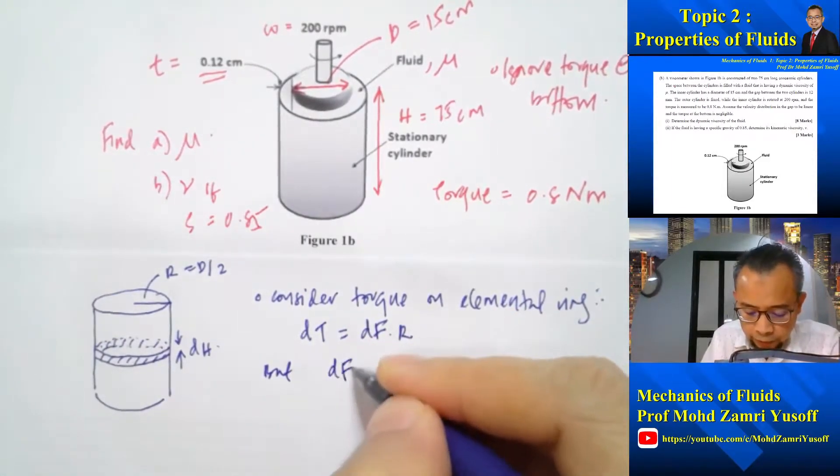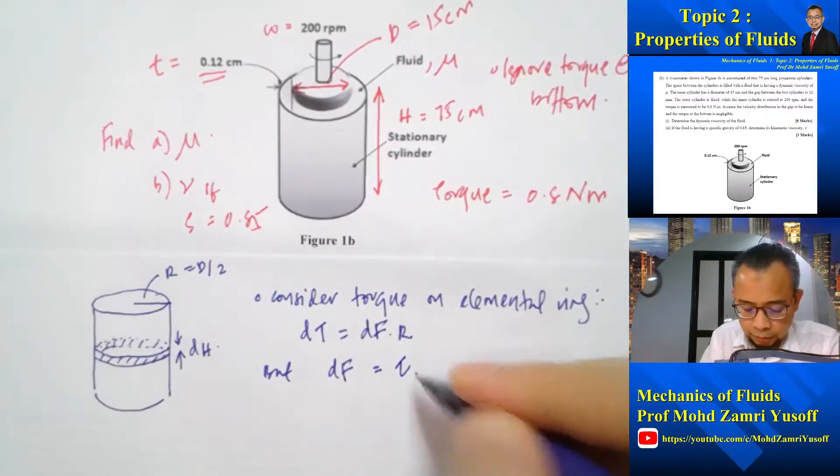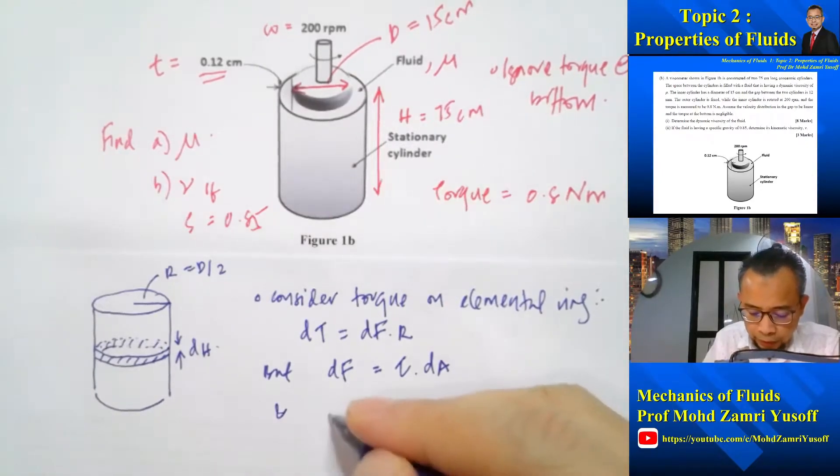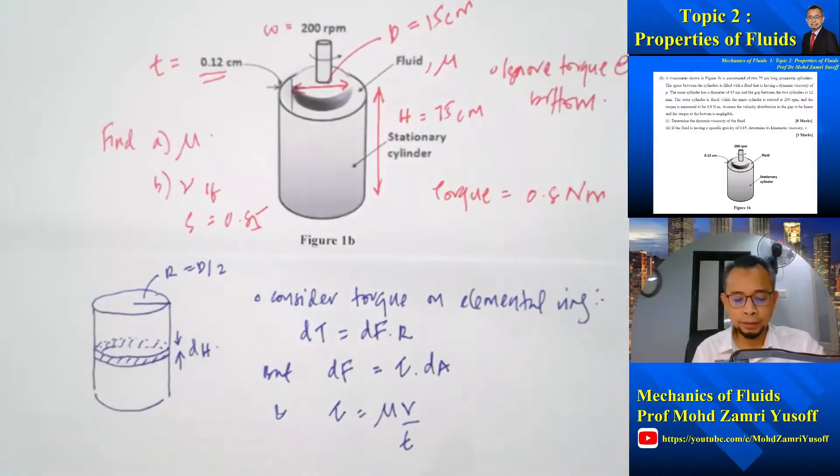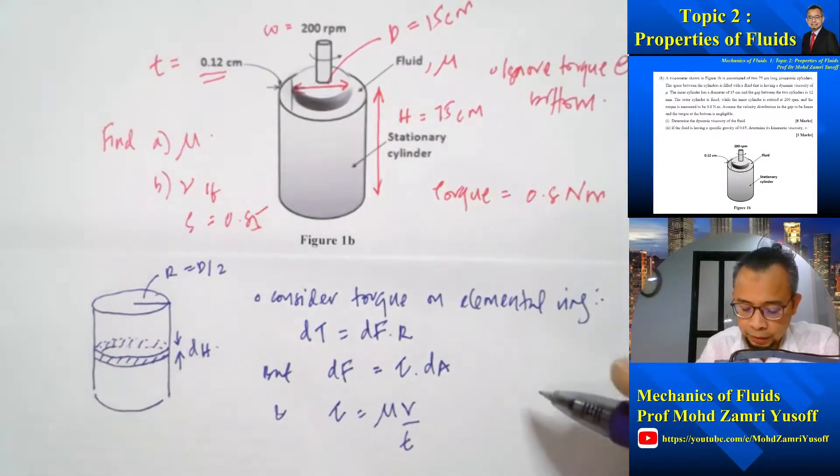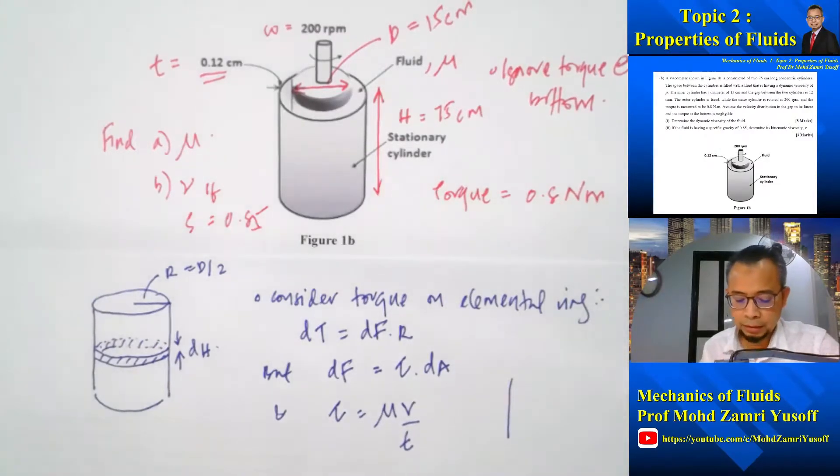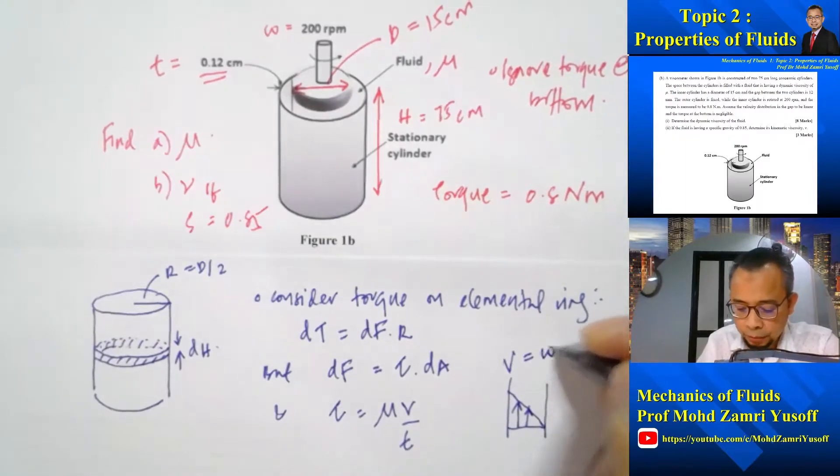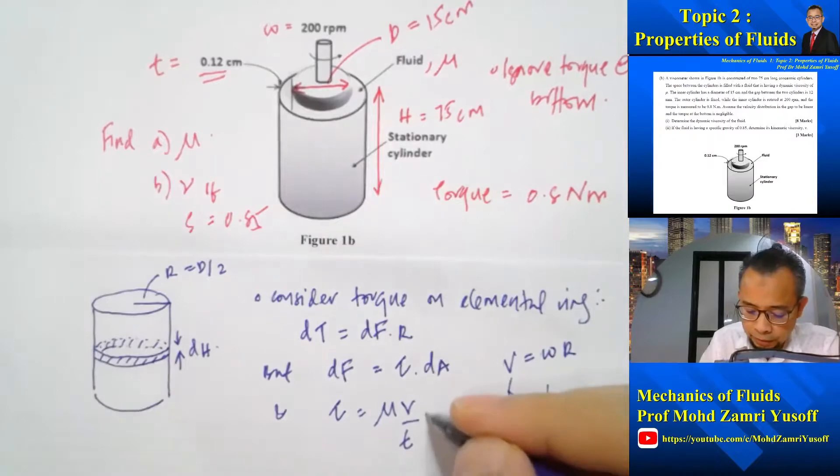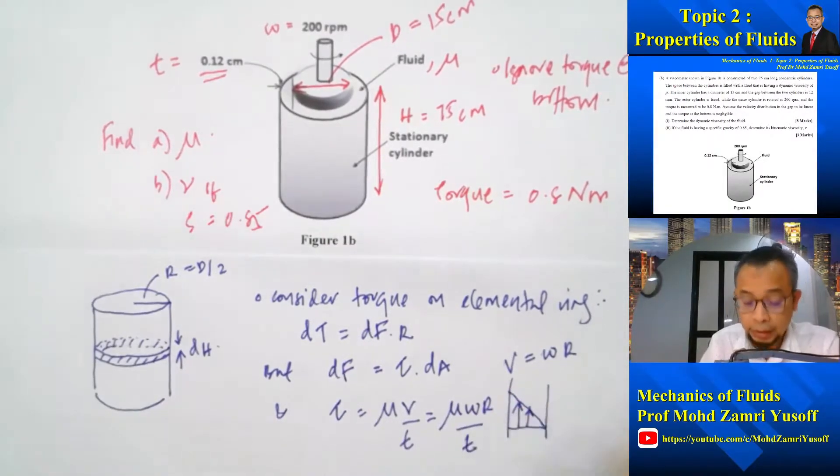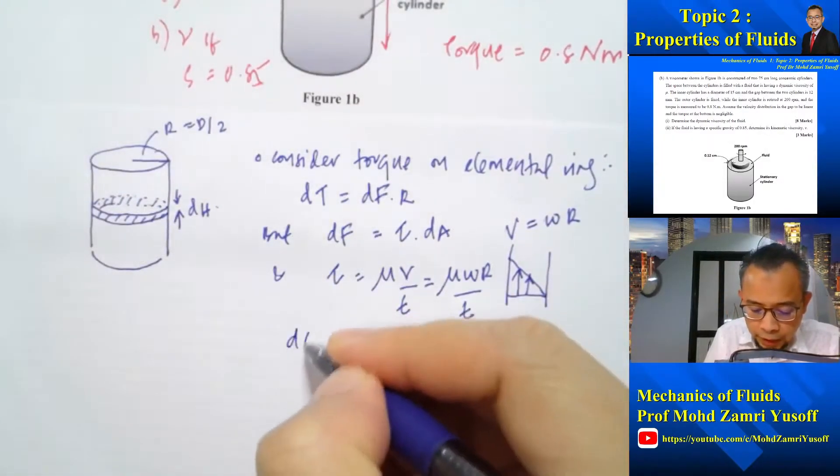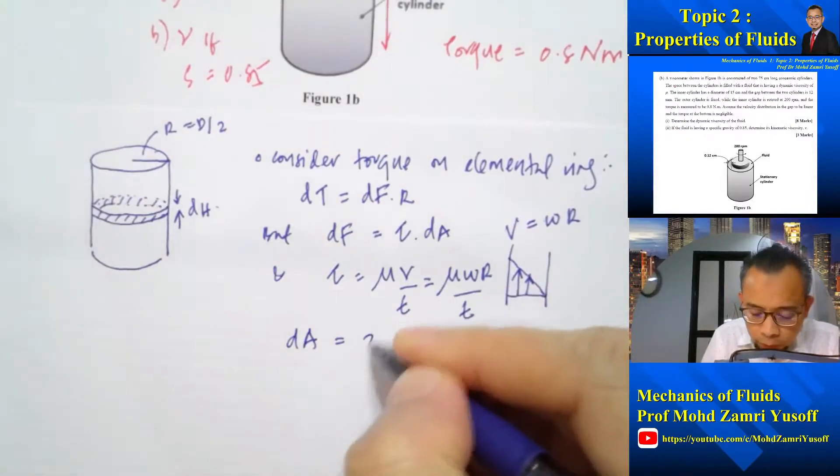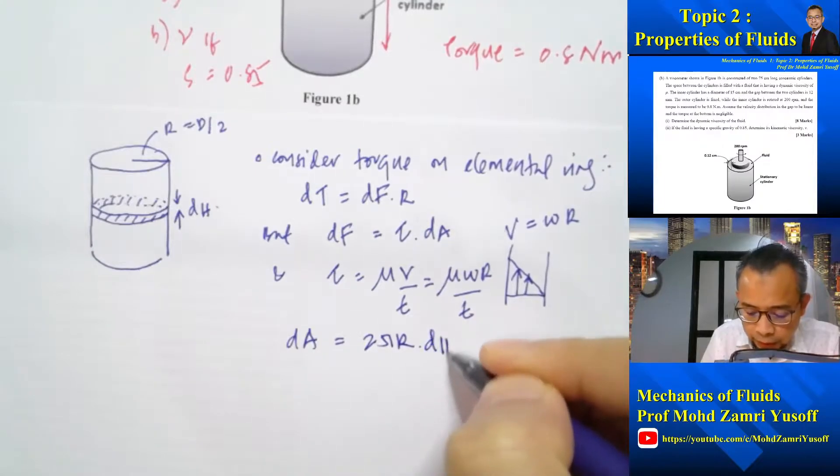But we know that df for shear stress is actually equal to tau multiplied by dA. And we know that tau is actually equal to mu v over t, where t is the thickness of the oil. And if we consider the velocity profile, this is the cylinder which is rotating and this is the outer cylinder. So the velocity is actually equal to v which equals omega r. So we can write this as mu omega r divided by d. If you consider dA, dA is equal to 2 pi r multiplied by dH.